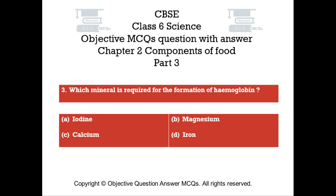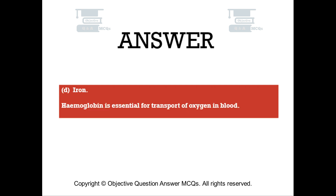Question number 3: Which mineral is required for the formation of hemoglobin? Option A: Iodine. Option B: Magnesium. Option C: Calcium. Option D: Iron. The right answer is Option D — Iron. Hemoglobin is essential for transport of oxygen in blood.